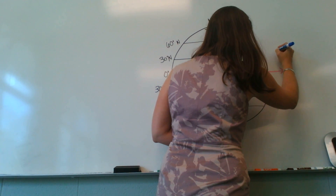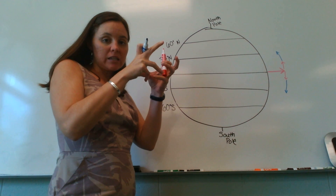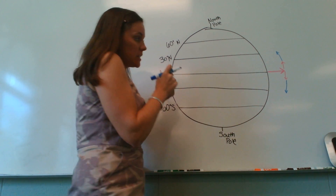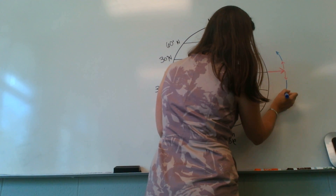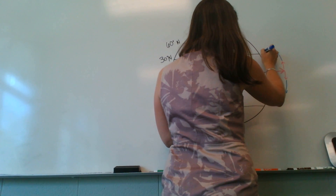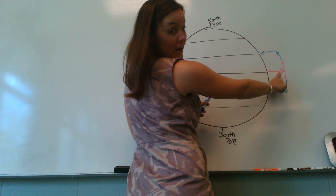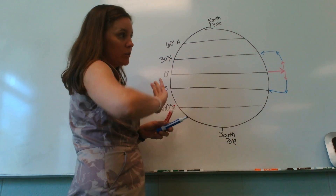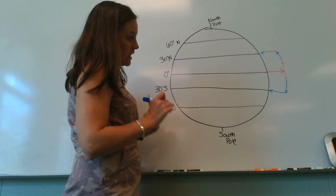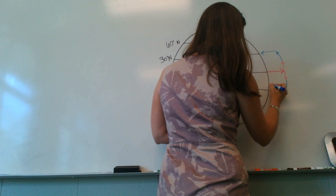Cool air sinks. All the little air molecules clump together, condense, and they sink. This is going to create an area of high pressure, because you have all the little air molecules pushing down on one point. Just like when all of the air rises, it creates a low pressure, because all of the air molecules are leaving that area. And then it's going to hit the surface of the Earth and diverge again.